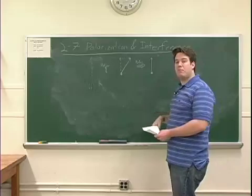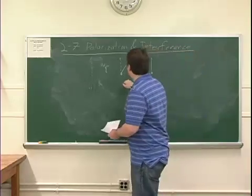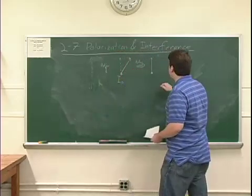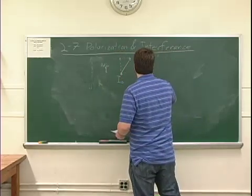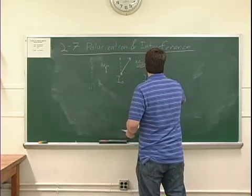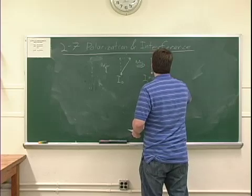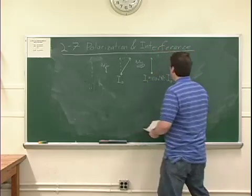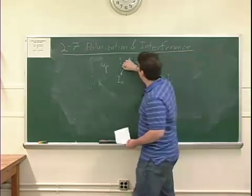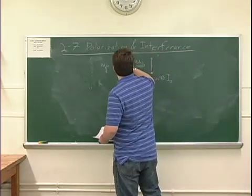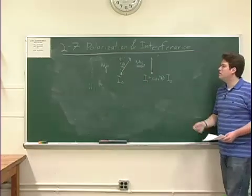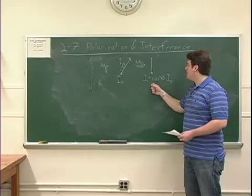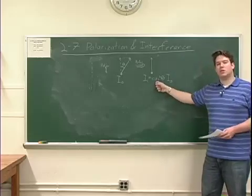This relation is called Malus's Law. It says that for an intensity I0, the intensity after one polarizer will go like cosine squared of the angle between the polarizing direction and the original direction or the original axis of polarization of the light. What you'll do today is try to confirm Malus's Law.